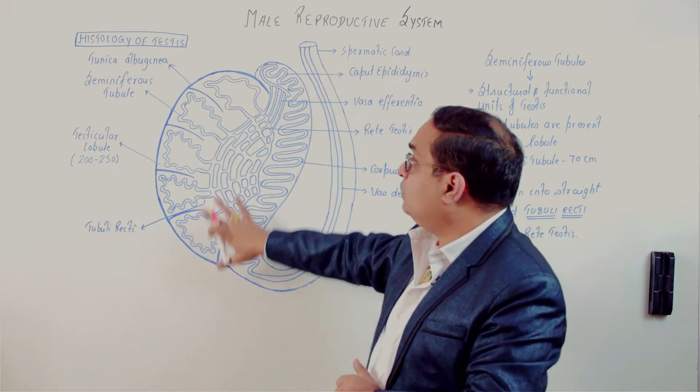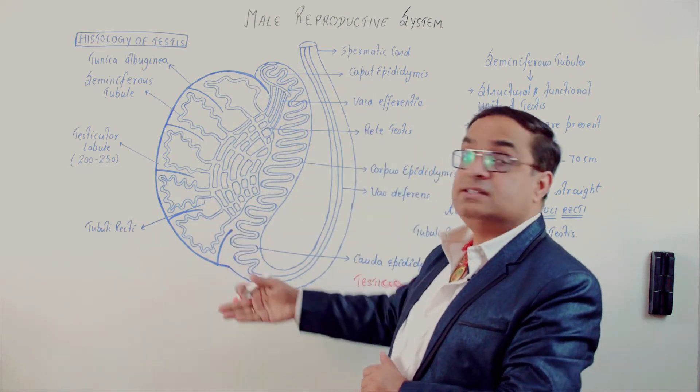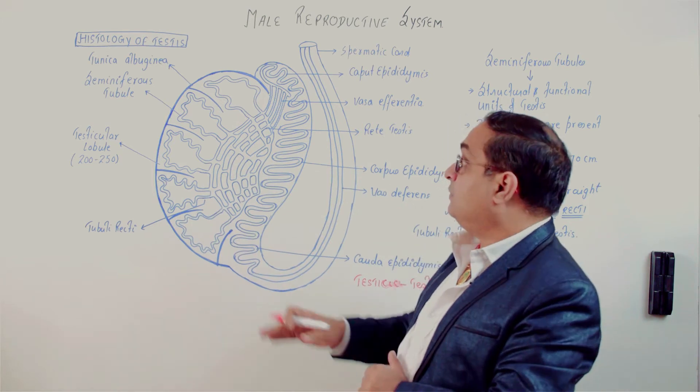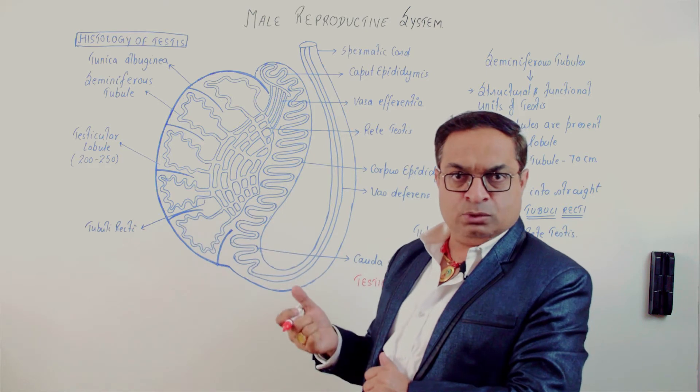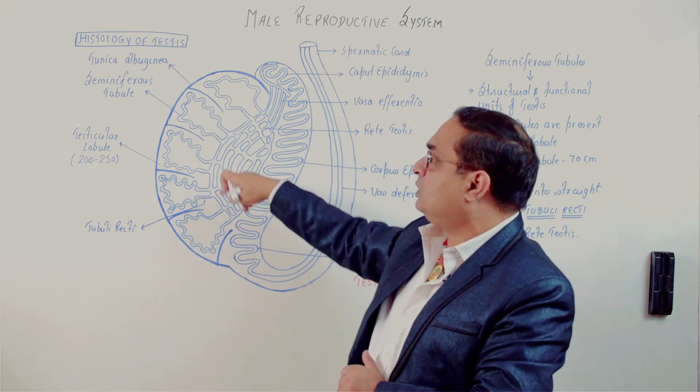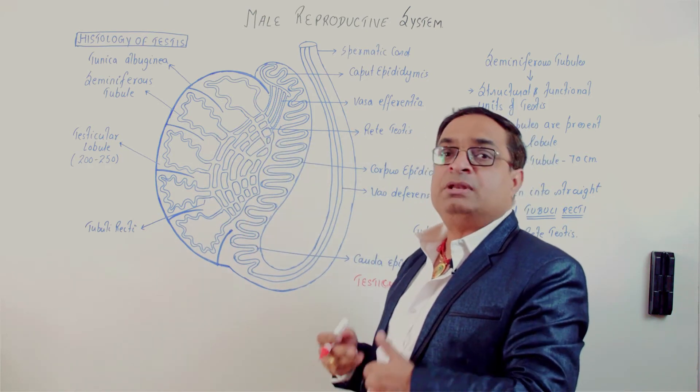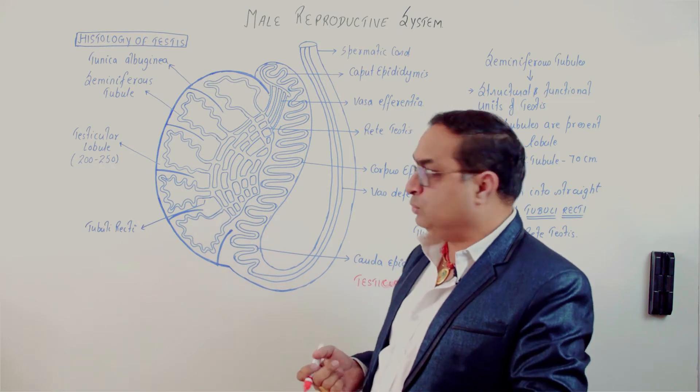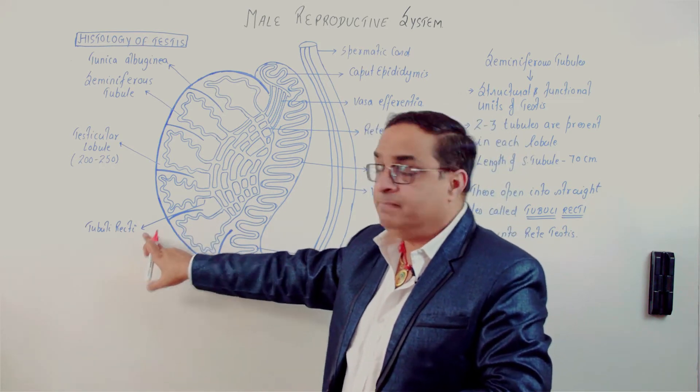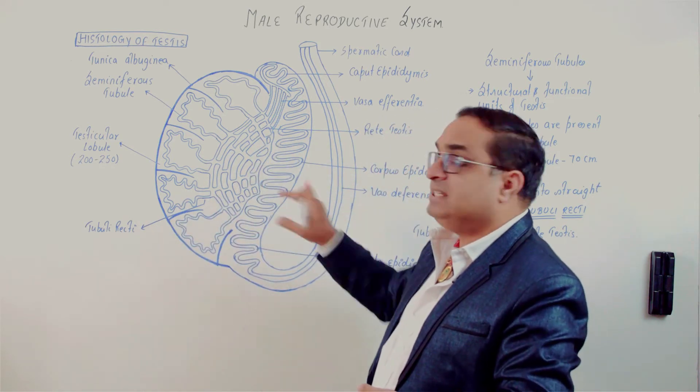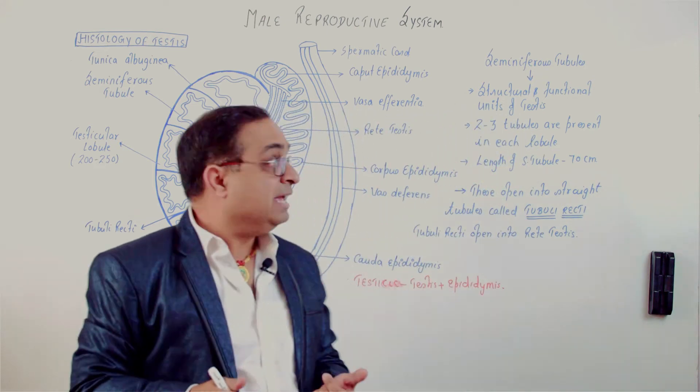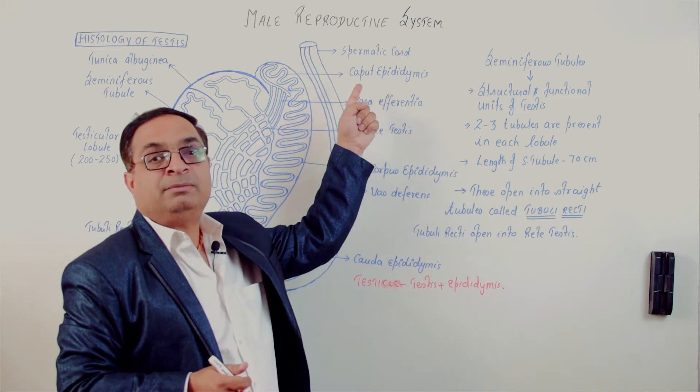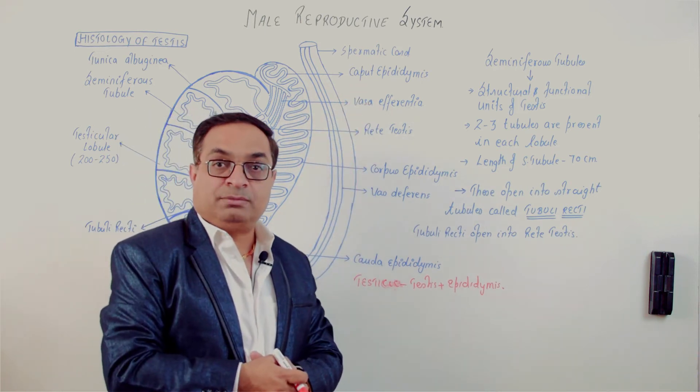So this diagram is showing you the inside of the testes. It is a mid-sagittal section in which you can see the testicular lobules, 200 to 250 lobules. Each lobule has two to three seminiferous tubules. Seminiferous tubules open into straight tubules called tubuli recti, which open into rete testis, then vasa efferentia originate from rete testis and carry sperms to the head of the epididymis, the caput epididymis.